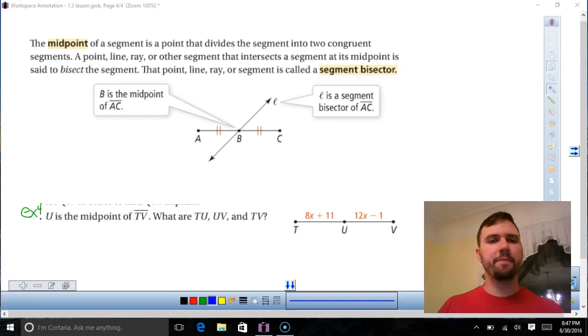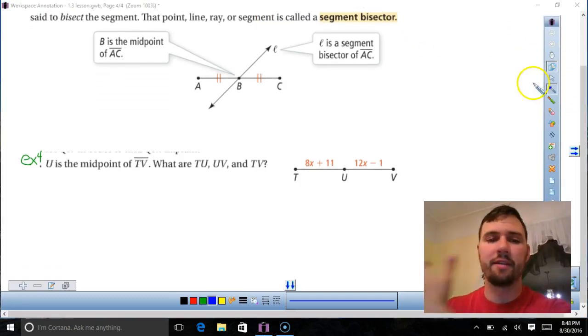A midpoint takes a segment and it cuts it into two equal parts, which makes sense. Midpoint, middle, middle point, cuts in half. Now if you have a line that cuts in half, that's called a segment bisector. Bi means two, sect means cut. So it cuts into two equal parts. So whenever you see midpoint, it cuts the line in half. And when you see bisector, it cuts in half, for angles and for segments. That's going to come up next lesson. Bisector cuts in half, midpoint is that point that's halfway.